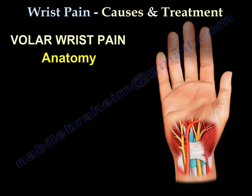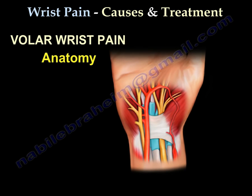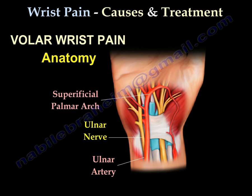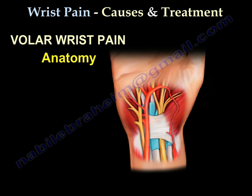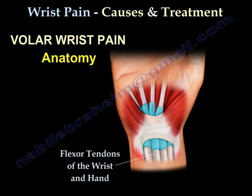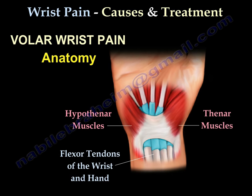Palmar wrist anatomy includes the ulnar artery, ulnar nerve, superficial palmar arch, median nerve, and radial artery. The flexor tendons of the wrist and hand, the hypothenar muscles, the thenar muscles, and the transverse carpal ligament are also key structures.